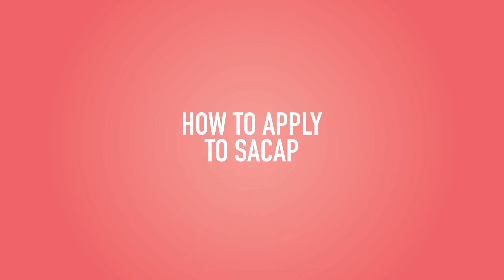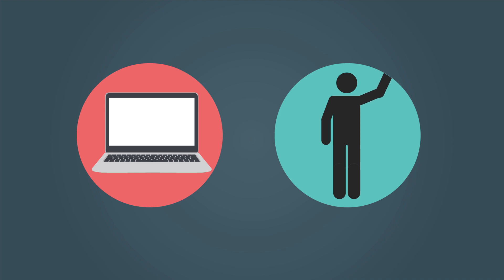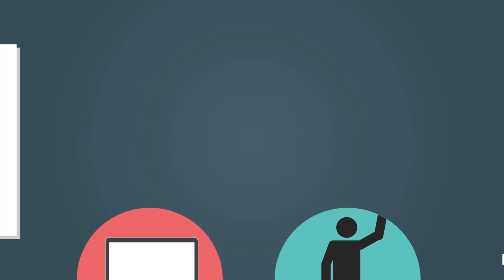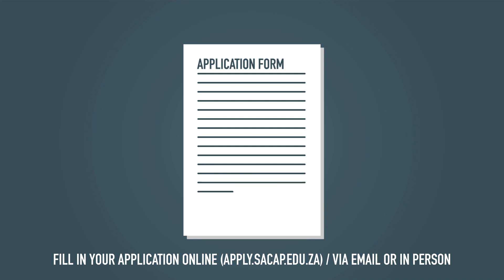Applying to SACAP is easy. All it takes is four basic steps to go from choosing a study pathway to being welcomed on board. Chat to your admissions officer if you need answers or advice about our courses and your choices. Fill in your application form plus all supporting documents, or give it to your admissions officer in person.